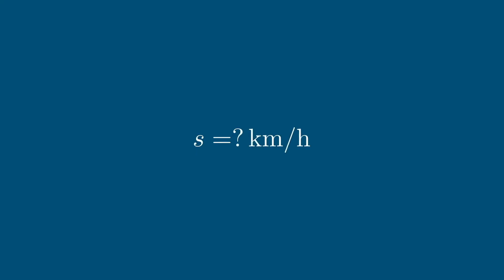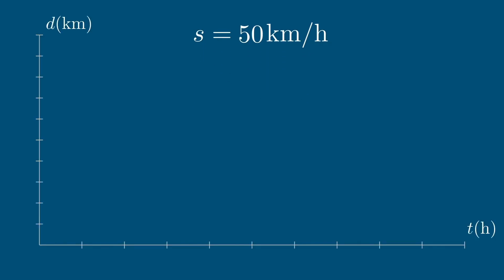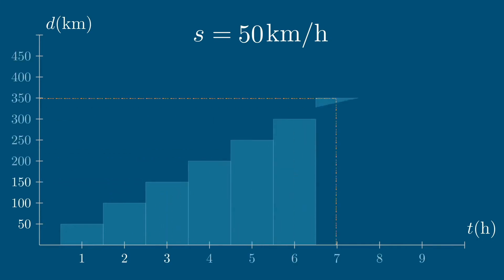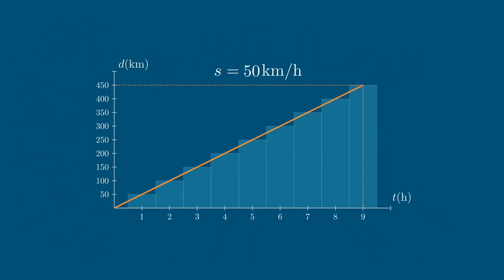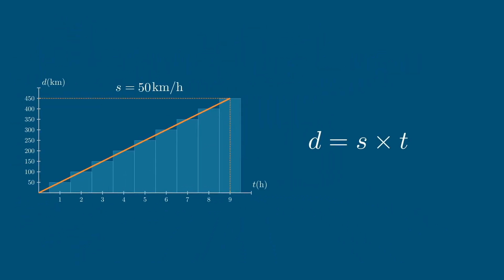I have the time, but I need the distance, so I need the speed of a plane. Speed is measured in kilometers per hour, and the relationship is: distance equals speed multiplied by time. For example, driving at 50 kilometers per hour, in one hour you travel 50 km; double the time, double the distance. So if I have the time to fly around the Earth and the speed of an airplane, I can calculate the distance.